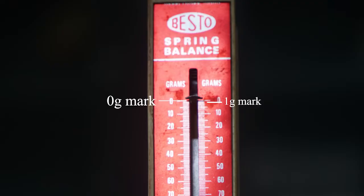First part of the procedure is to find the least count. To find the least count, we must first find the 0 gram mark and the next numbered marking which is 10 grams. You will notice that there are 10 divisions between the 0 gram mark and the 10 gram mark, which means that the lowest that this spring balance can read is 1 gram.